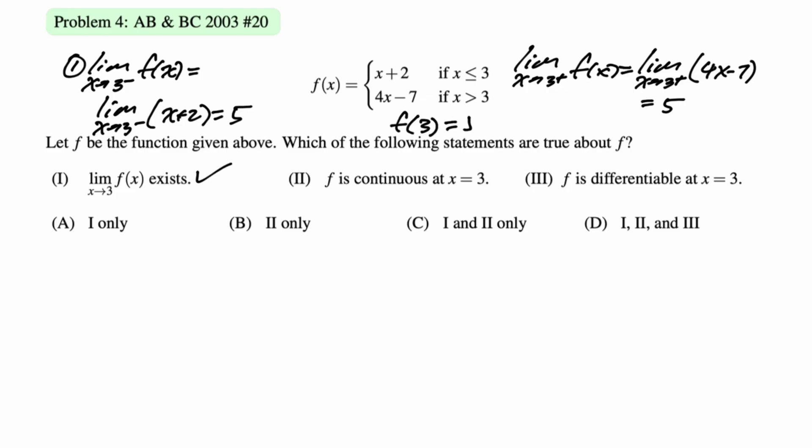Now we've got to find F of 3. F of 3 uses the top branch, so it's just 3 plus 2, which is 5. So the limit equals the value of the function. The function is continuous.